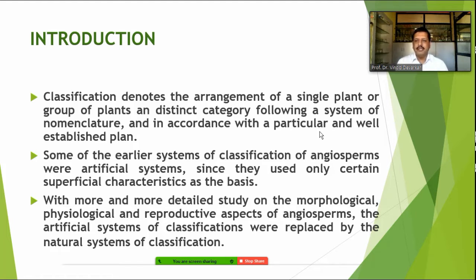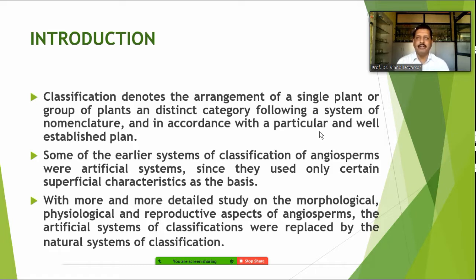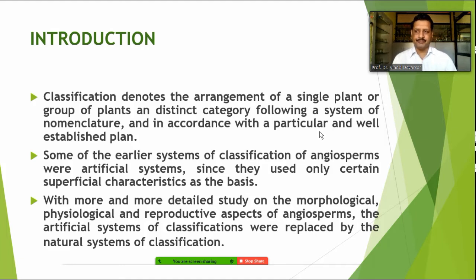Classification denotes the arrangement of a single plant or a group of plants into distinct categories following a system of nomenclature in accordance with a particular well-established plan. Some of the earlier systems of classification of angiosperms were artificial systems, since they used certain superficial characters — easily observable and recognizable characters — as a basis, not deeper anatomical characters.